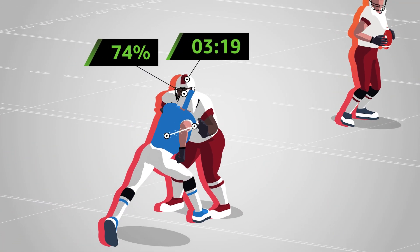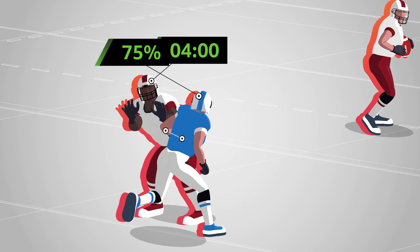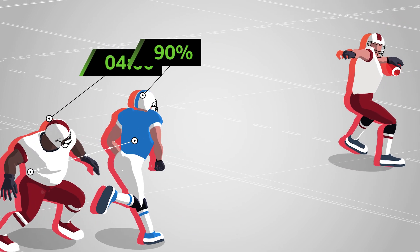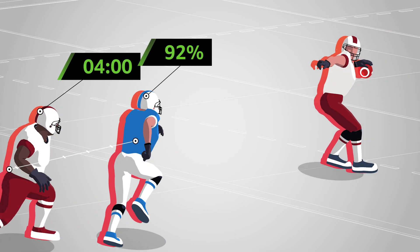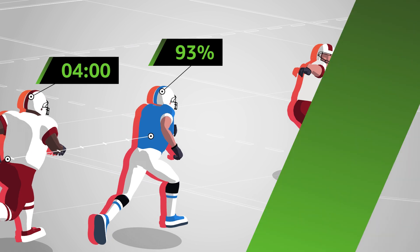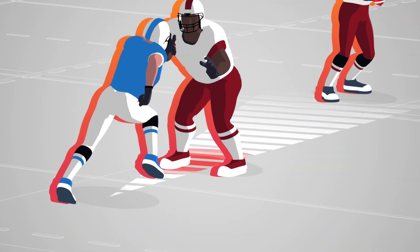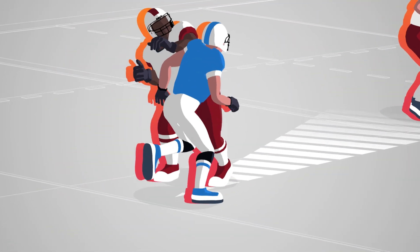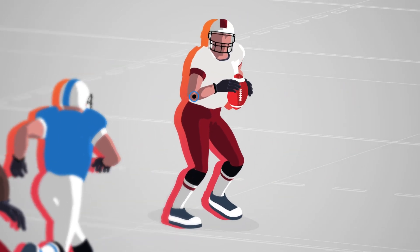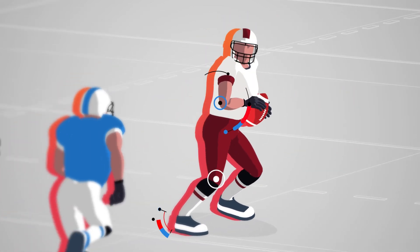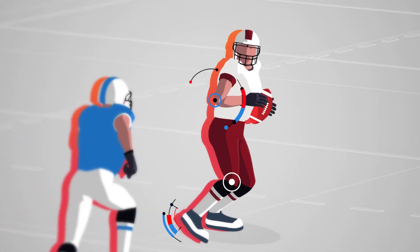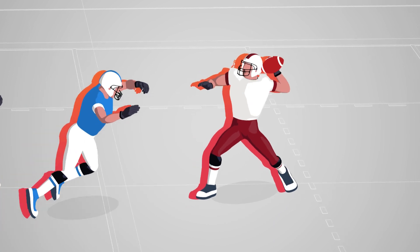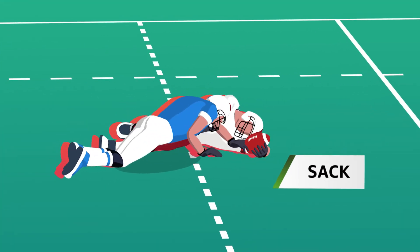We can now see how quickly a pressure occurs, the magnitude of the pressure, and how it changes over the course of the passing play. It also factors in key details, like how clear a path the rusher has to the quarterback, and how the quarterback reacts to an oncoming rusher.